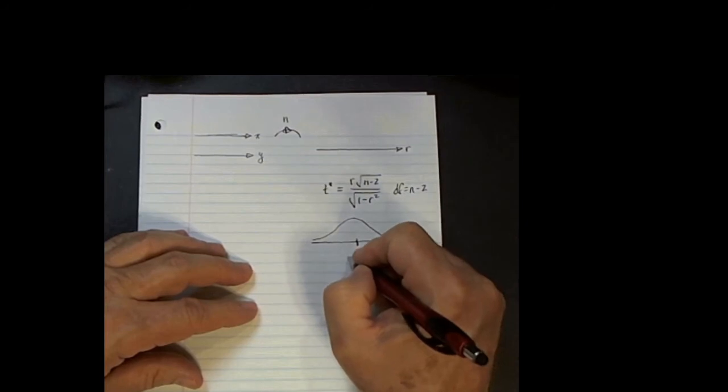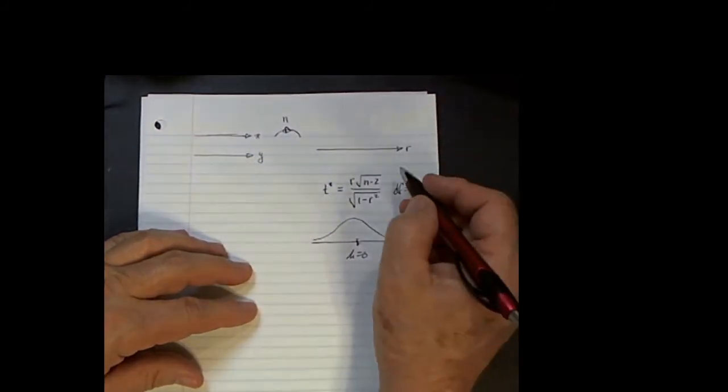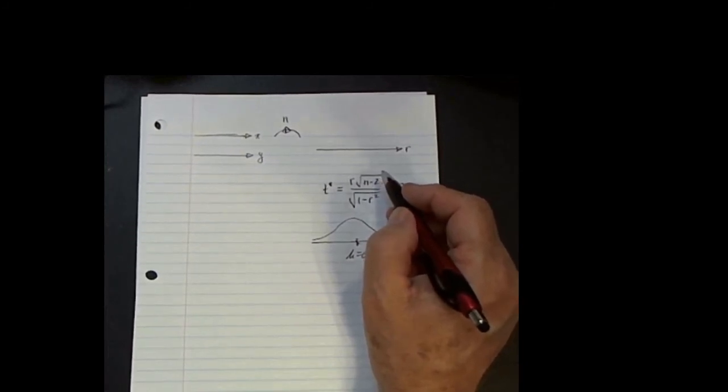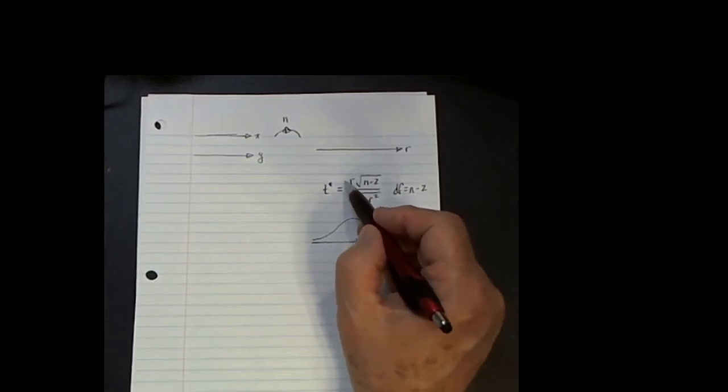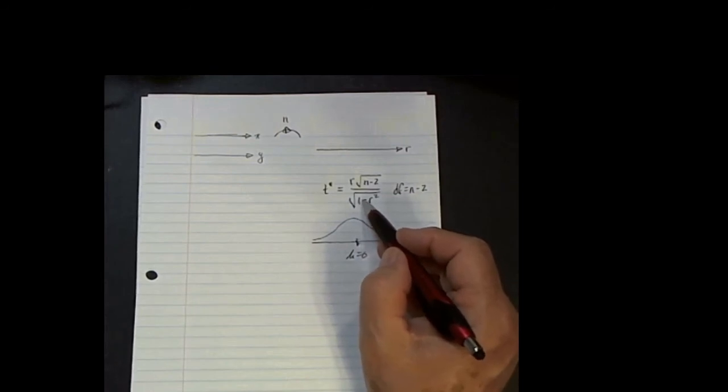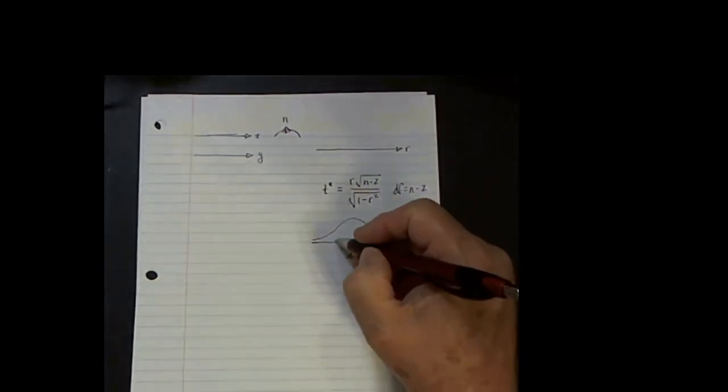So it's distributed like this. We happen to know that a T distribution has a mean of 0. We're going to find our particular T star, which is going to be negative. Notice why. Our r, we've already calculated our r, and it's a negative value. And of course, this n minus 2 is going to be a positive value. And of course, that square root is positive. 1 minus r squared is going to be positive. And so both of these are positive, and this one is negative. So therefore, that result is negative.